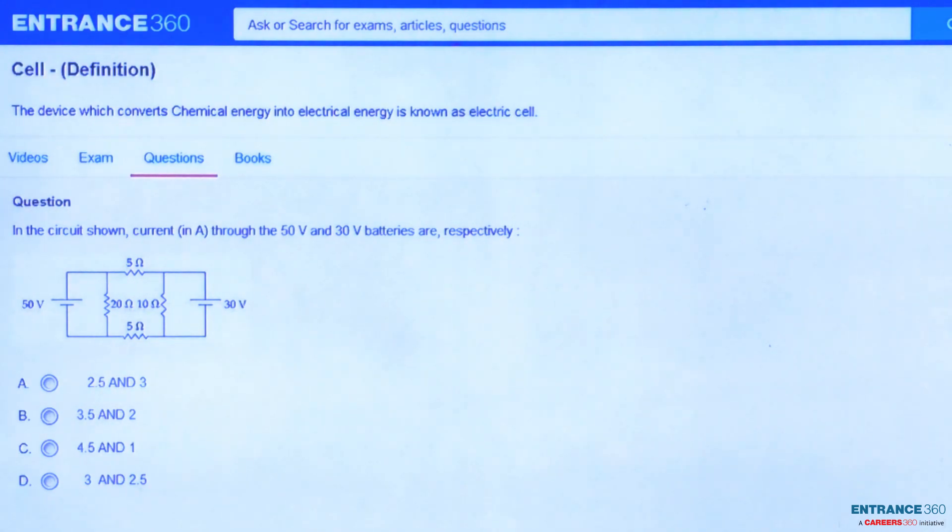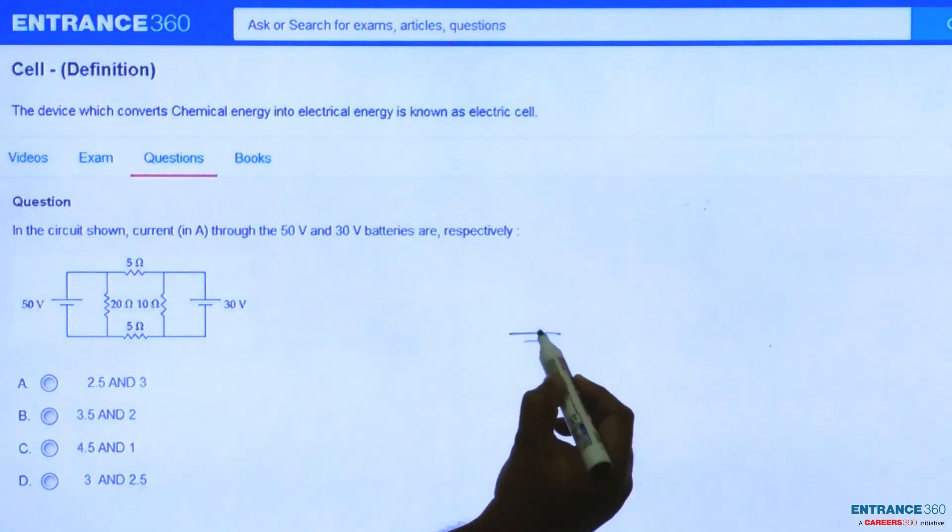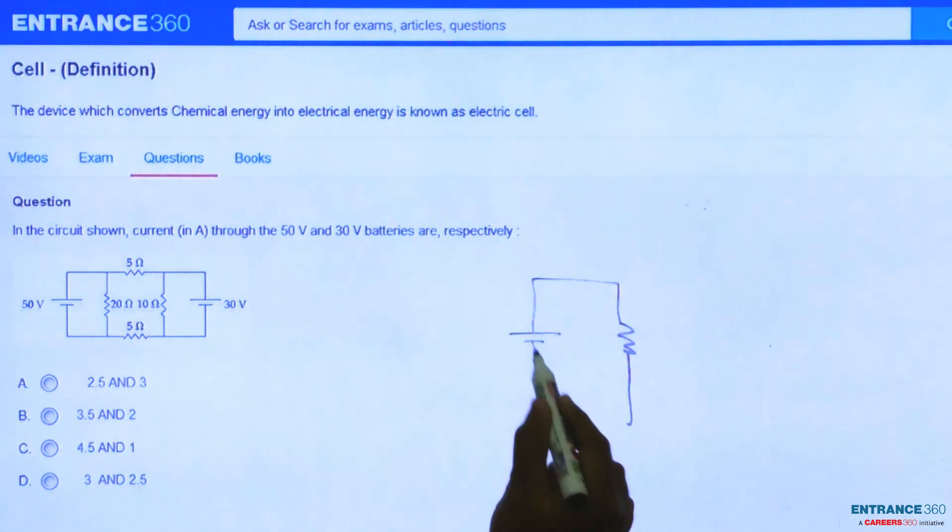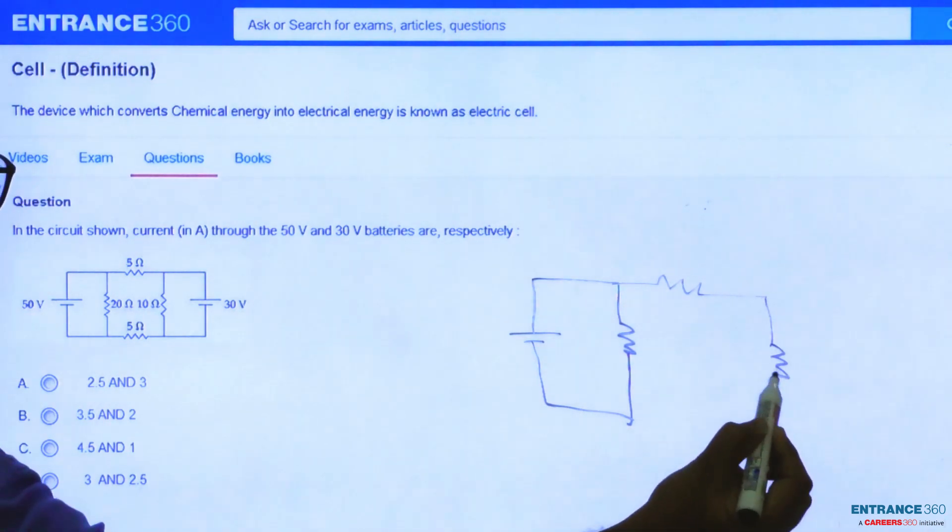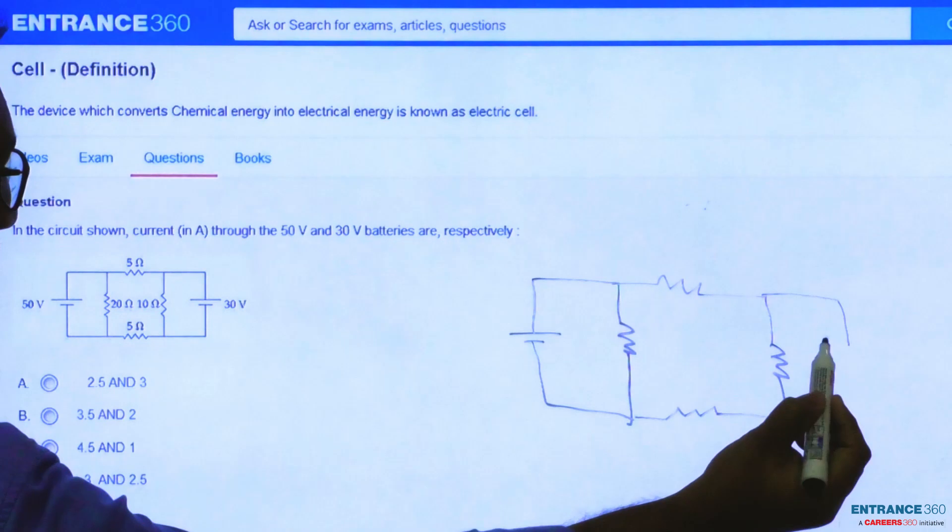Let's redraw the circuit. Here we have a 50 volt battery and 20 ohm resistance, a 5 ohm resistance, 10 ohm, another 5 ohm, and a 30 volt battery.